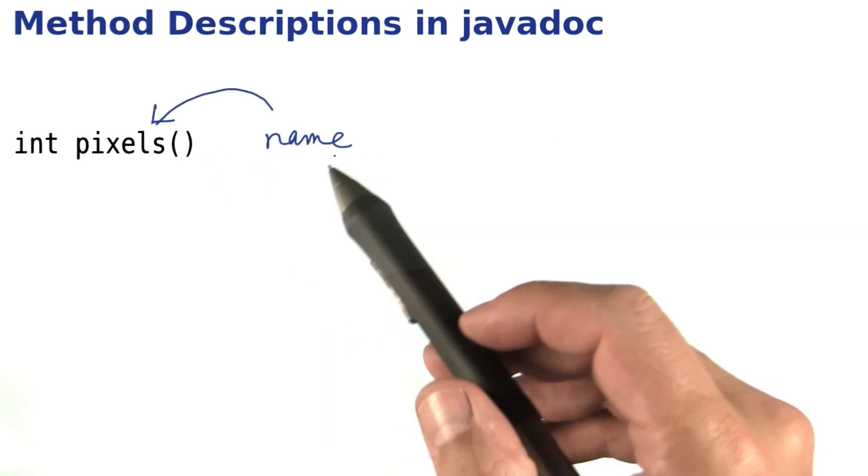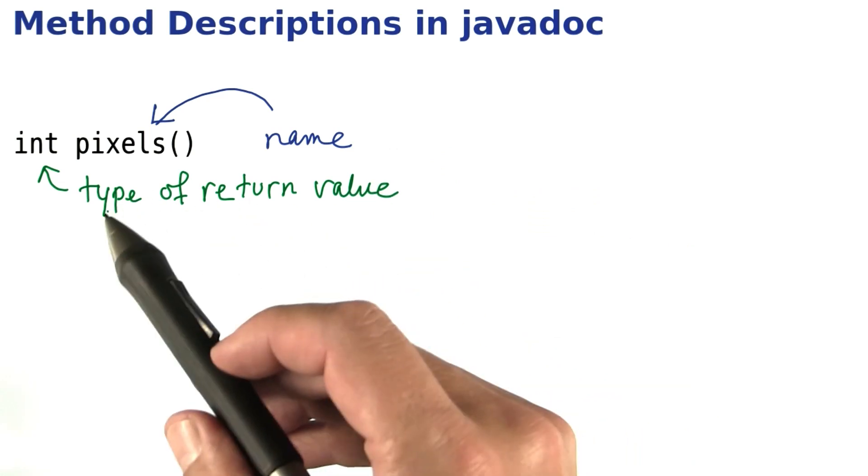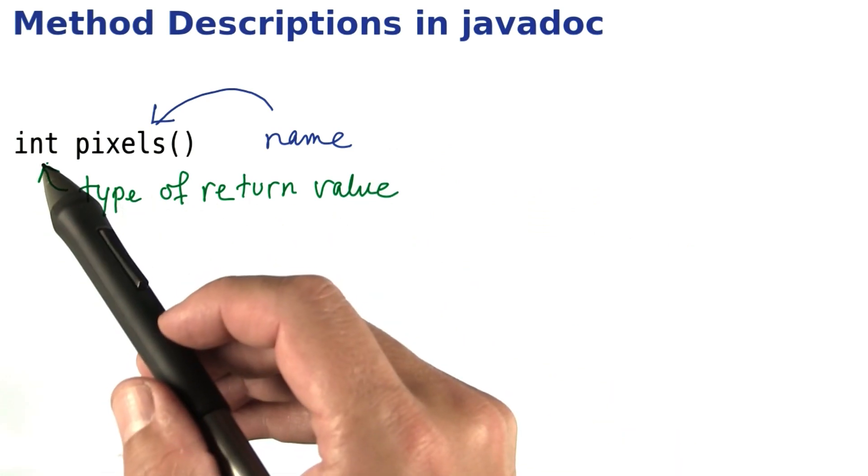Before the parentheses, you have the name of the method. In this case, pixels. Before the name, you have the type of the return value. In this case, that's int.